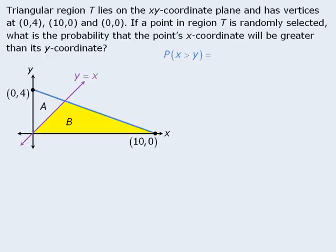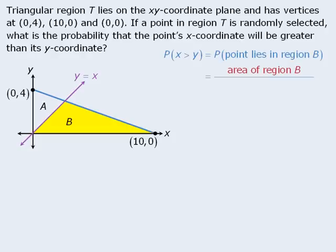Given this, we can rewrite our probability as the probability that a randomly selected point lies in region B. This probability will be proportional to the area of region B compared to the area of the original triangle, region T. So our probability will be equal to the area of region B divided by the area of the entire triangle, region T.